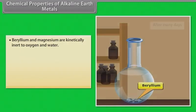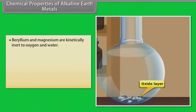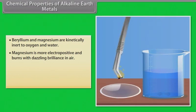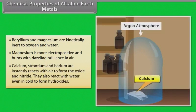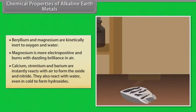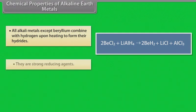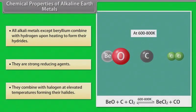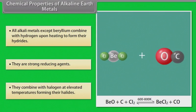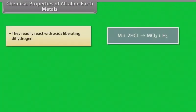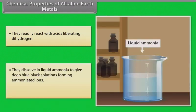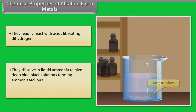Chemical properties of alkaline earth metals. Beryllium and magnesium are kinetically inert to oxygen and water. Magnesium is more electropositive and burns with dazzling brilliance in air. Calcium, strontium and barium are instantly react with air to form the oxide and nitride. They also react with water, even in cold, to form hydroxides. All alkali metals except beryllium combine with hydrogen upon heating to form their hydrides. They are strong reducing agents. They combine with halogen at elevated temperatures forming their halides. They readily react with acids liberating dihydrogen. They dissolve in liquid ammonia to give deep blue-black solutions forming ammoniated ions.